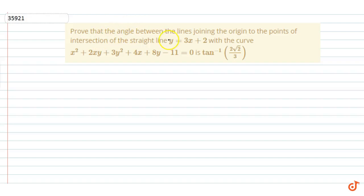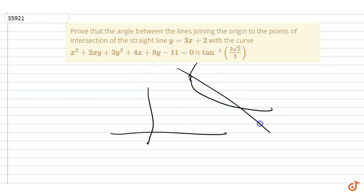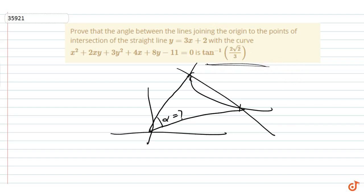I have asked this question: prove that the angle between the lines joining the origin to the points of intersection of a straight line and a curve is this value. We have a random curve and a straight line. When I cut these two points, this angle is what we have to prove.